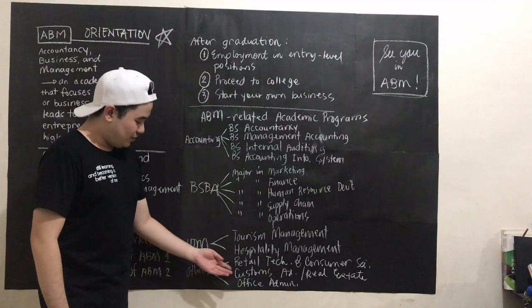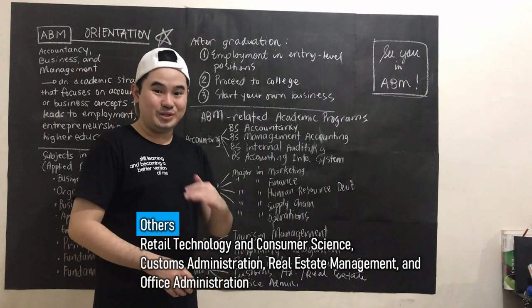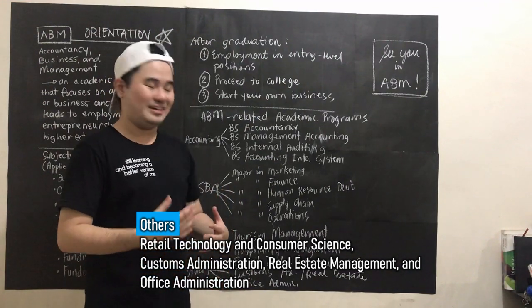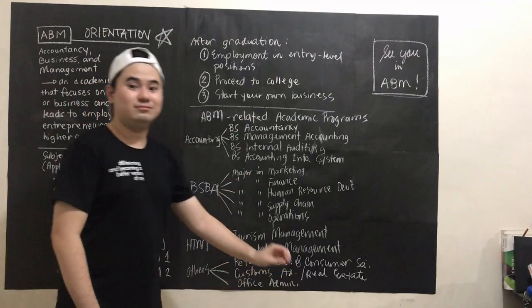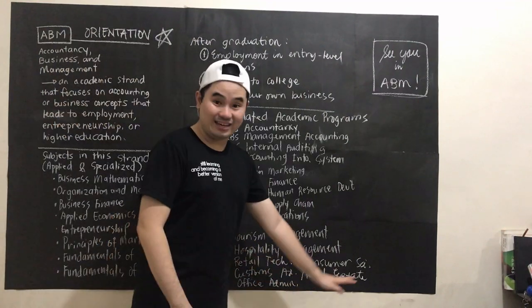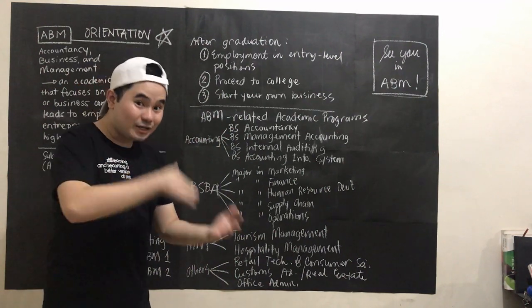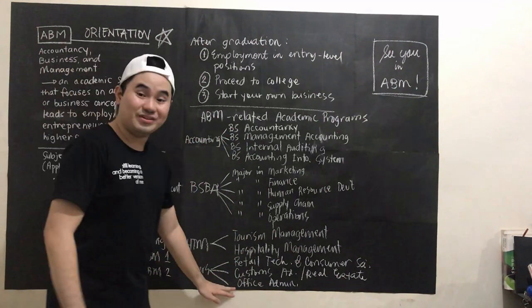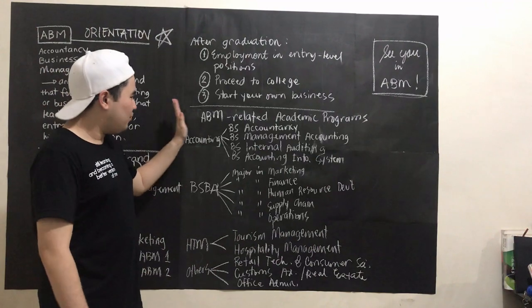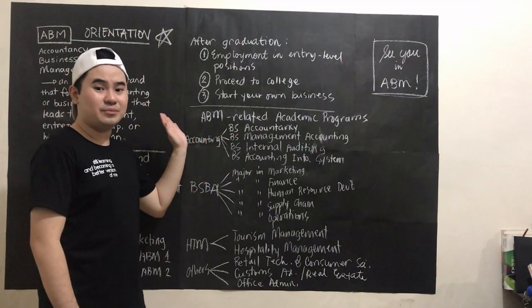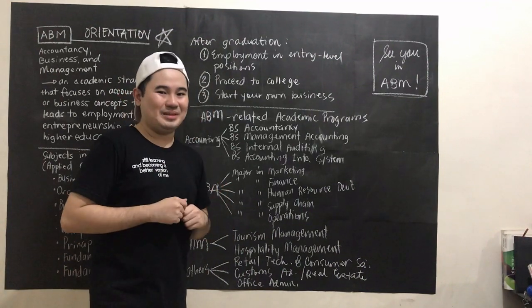We also have a new program: Retail Technology and Consumer Science — this is for e-business, online selling, which is very popular right now. The ABM strand can also lead to Customs Administration, Real Estate Management, and Office Administration. So there are many degree programs available. This is not an extensive list, so if you think something is lacking or I've explained something erroneously, please comment down below.